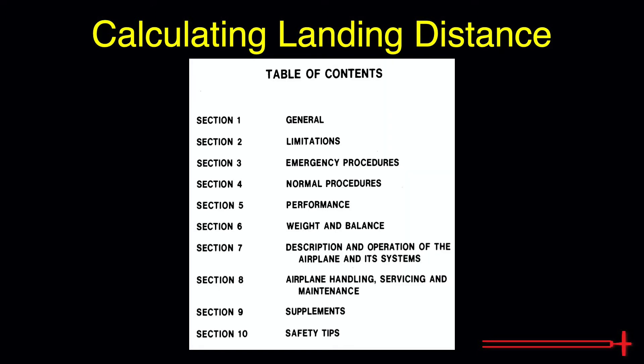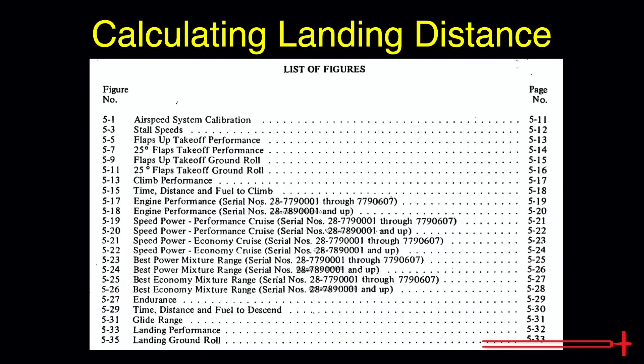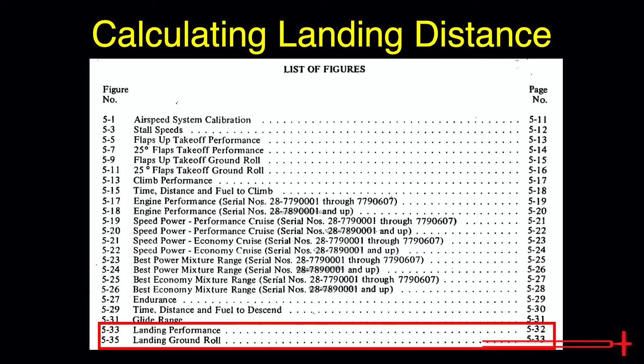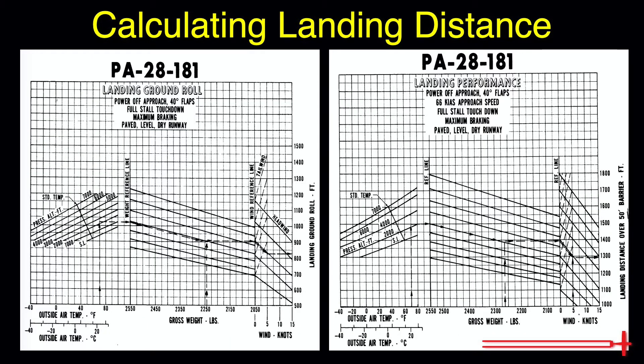Open up to the table of contents and find the performance section. Once there, let's jump into the performance table of contents and look for landing performance. For the Archer, there are two separate charts.